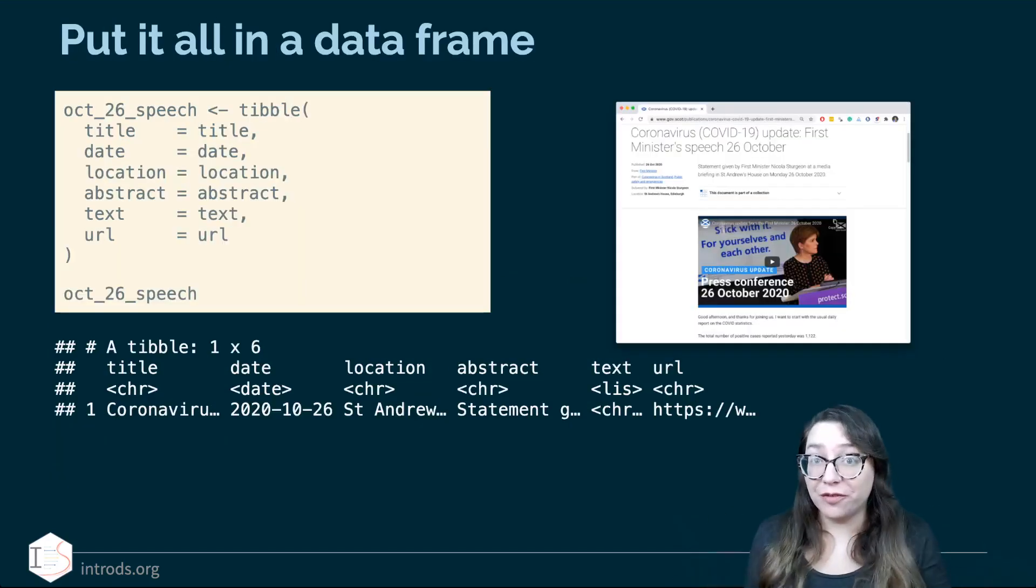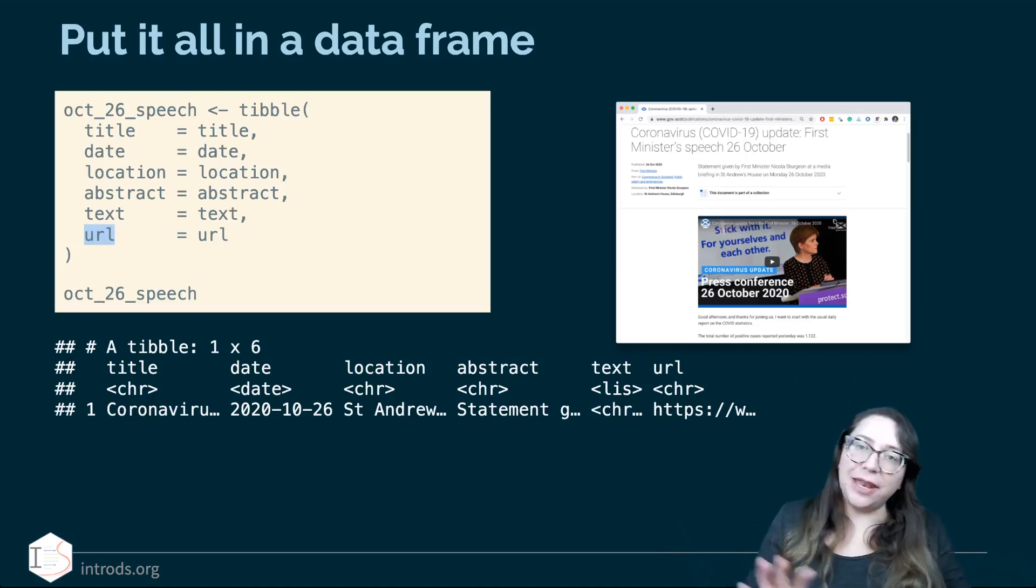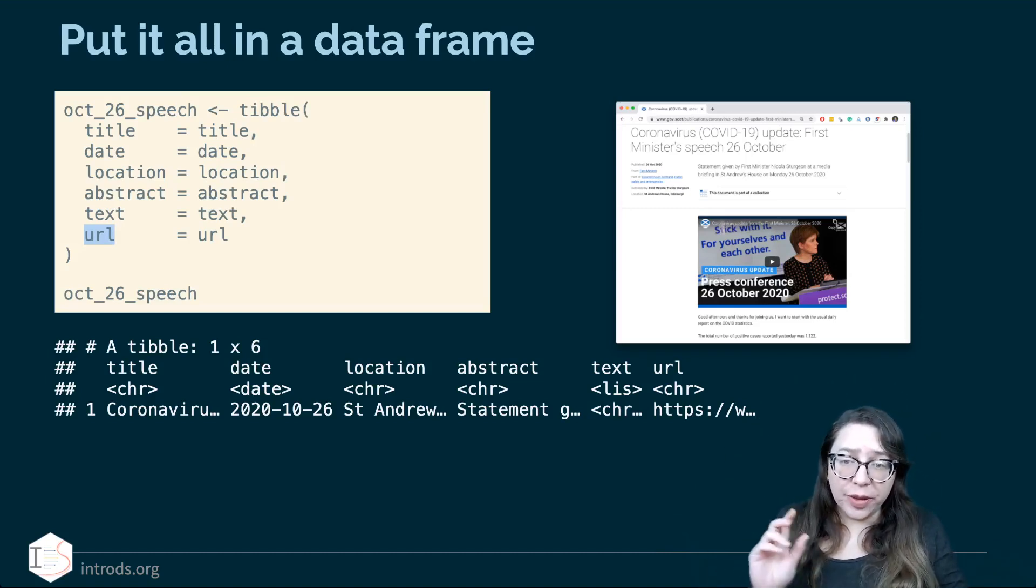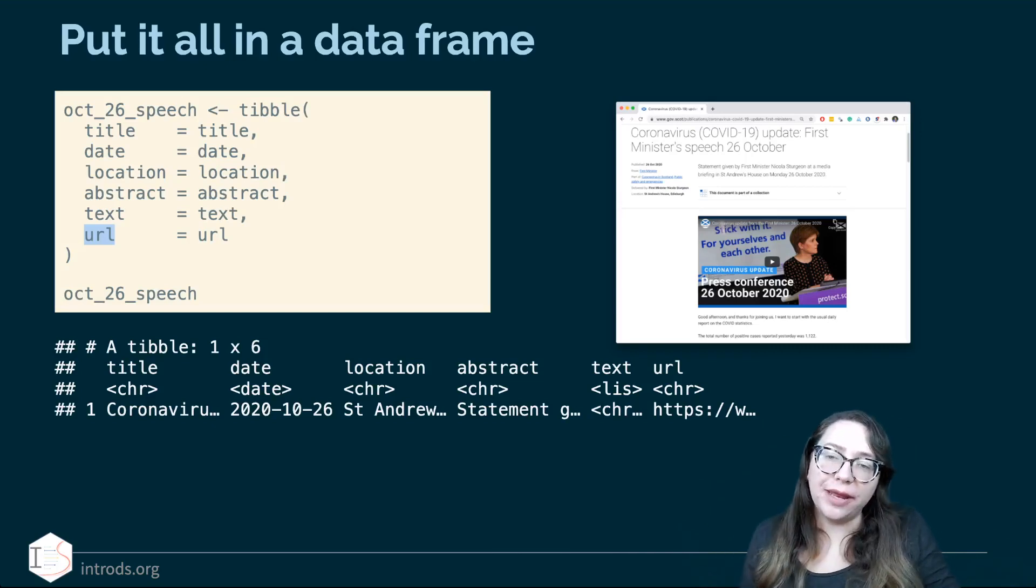All right so now we can put everything in a data frame so we got the title out we got the date out we got the location out we got the abstract out and the text out we got all of these from the individual web page and then the URL we already had this information right that's what we fed in at the beginning of our workflow we gave the URL we used the URL to scrape the page source to begin with so we have that information as well. So we're creating a tibble where the right hand side of this sorry the left hand side of it is the variable names and on the right hand side we have the objects that we had stored. So a tibble with one row because it's only from one day and six columns that's the six pieces of information we have and this one has the information for October 26th. So I called it oct_26_speech.